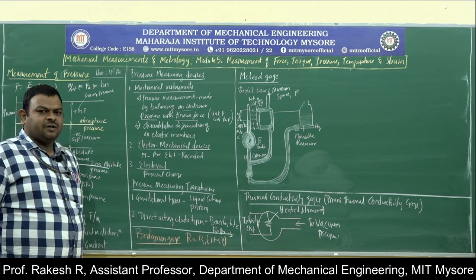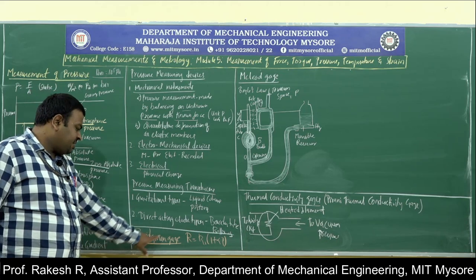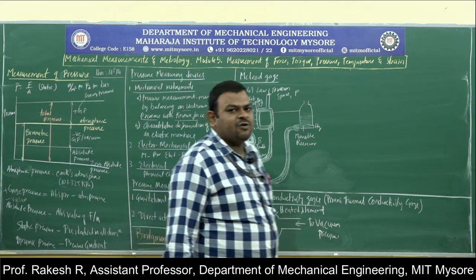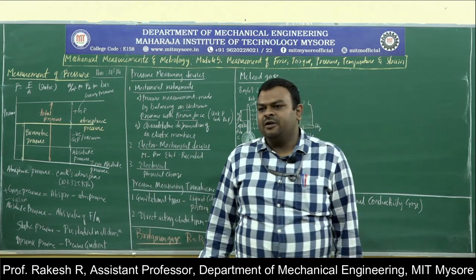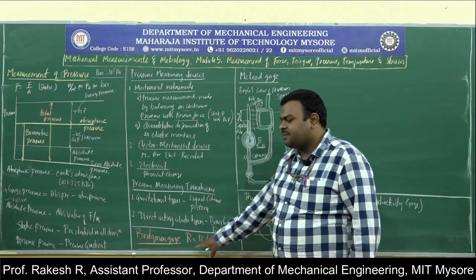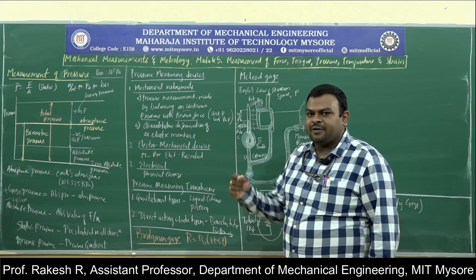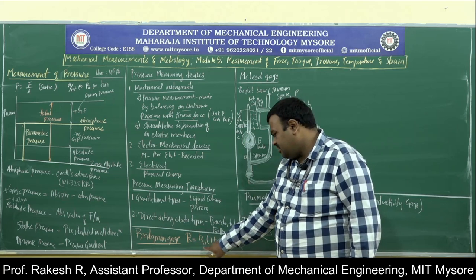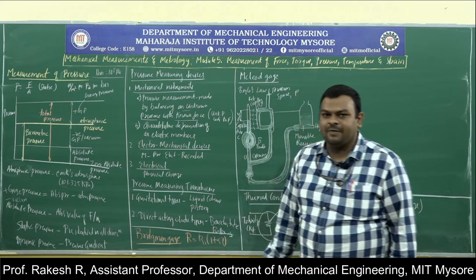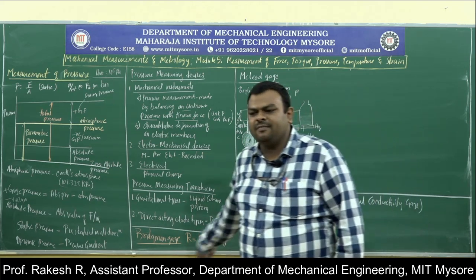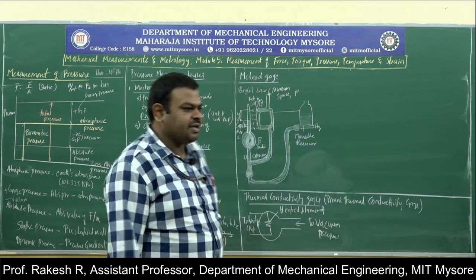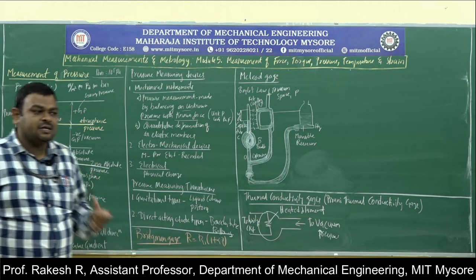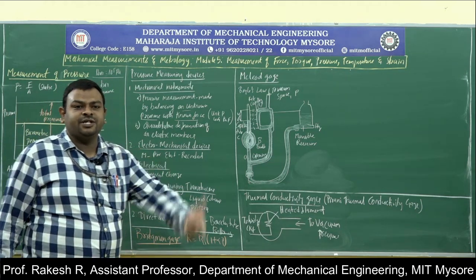Pressure measuring instruments include the Bridgman gauge, which measures pressure in terms of electrical resistance: R = R₁(1 + αP). This is not in the syllabus but is a basic instrument. Another important instrument is the McLeod gauge.